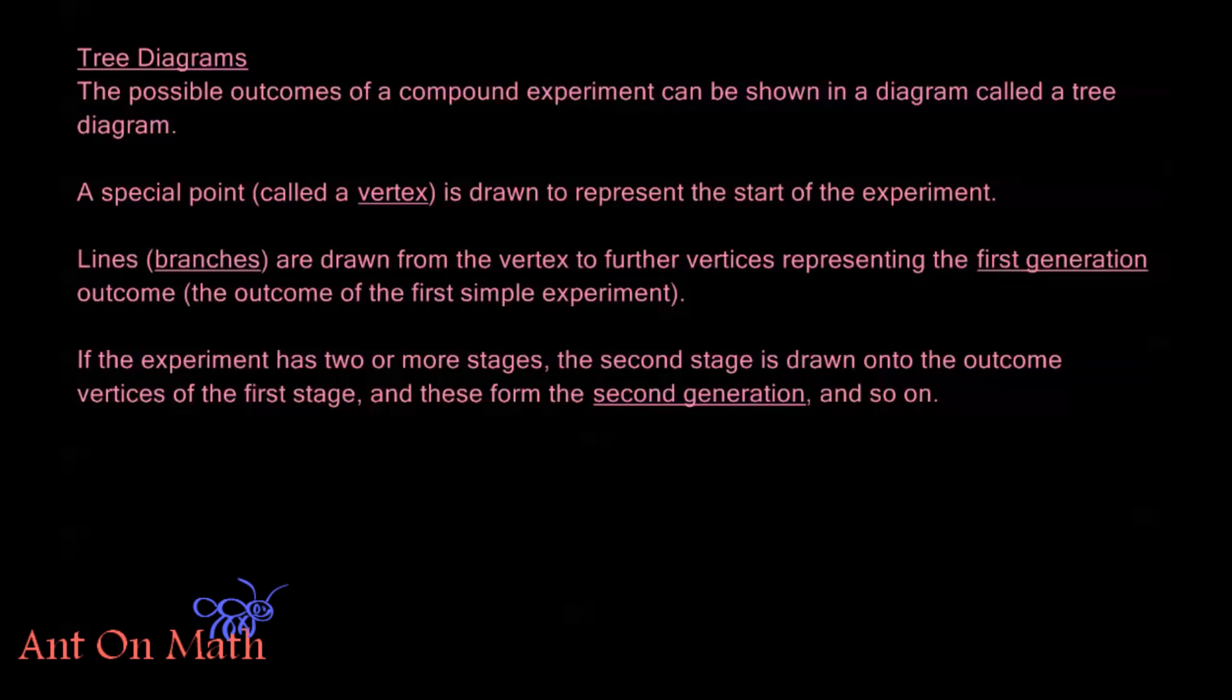What that means is these second set of vertices are the possible outcomes of the first simple experiment in our compound experiment. Now if the experiment has two or more stages, the second stage is drawn onto the outcome vertices of the first stage and these form the second generation and so on.